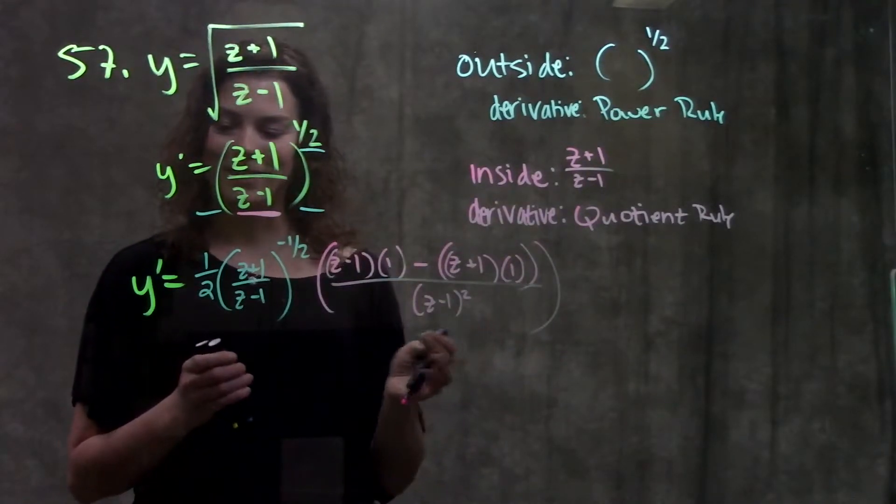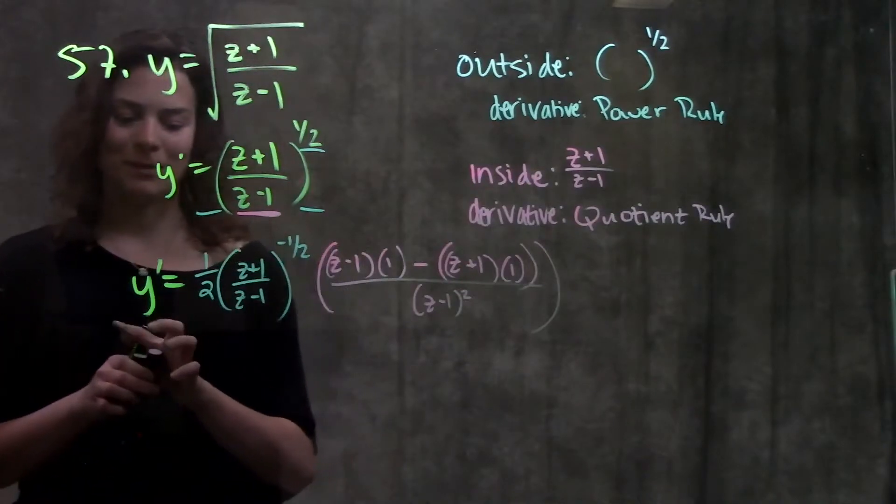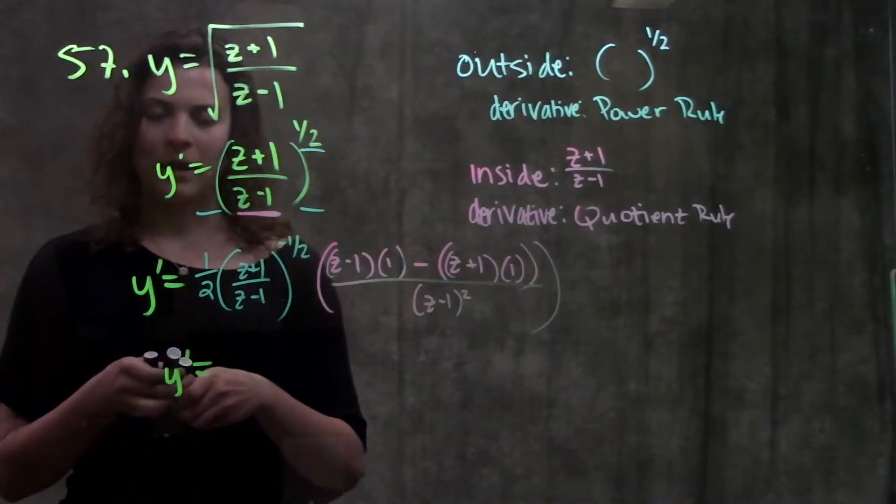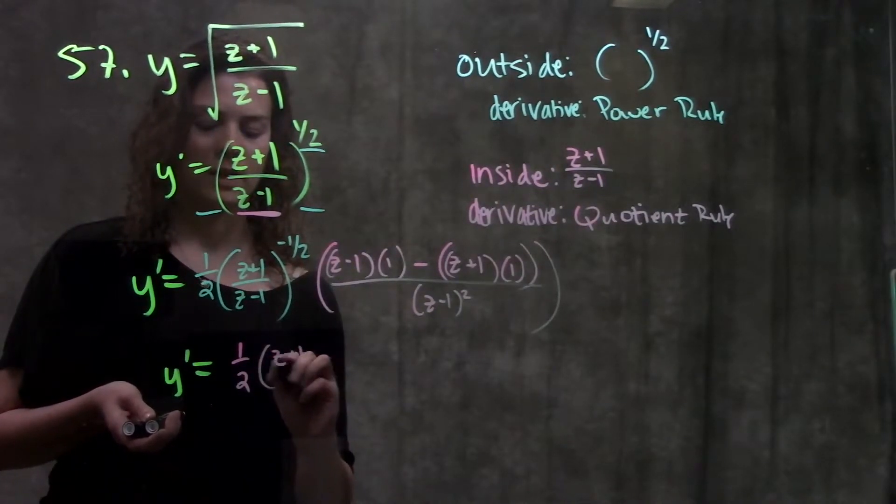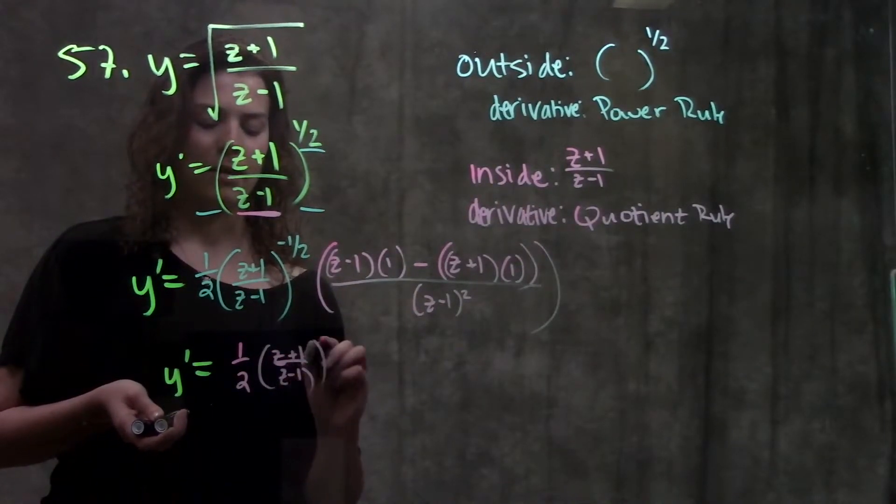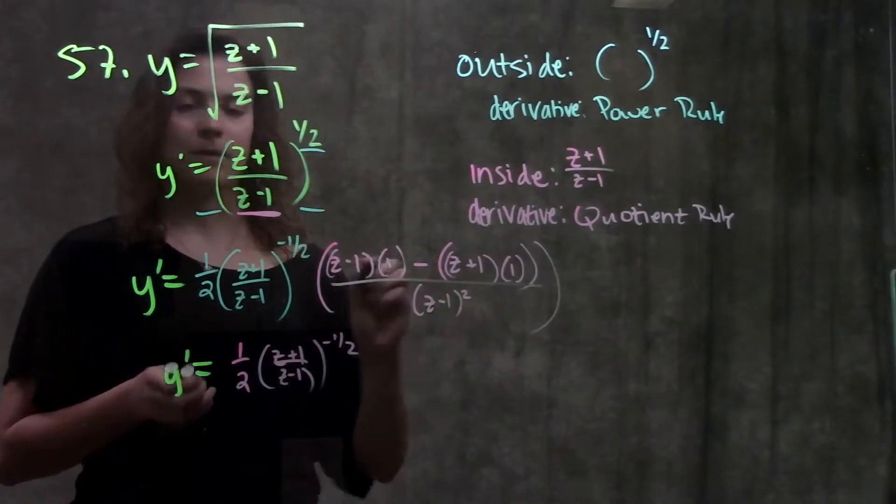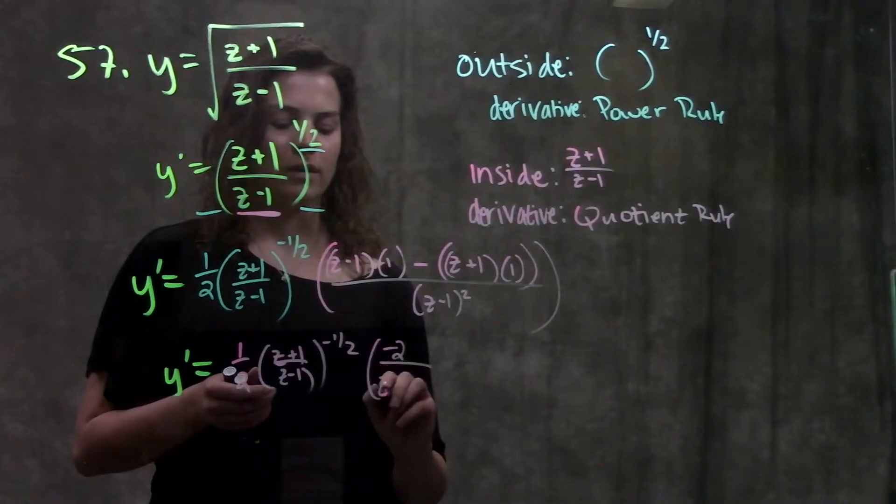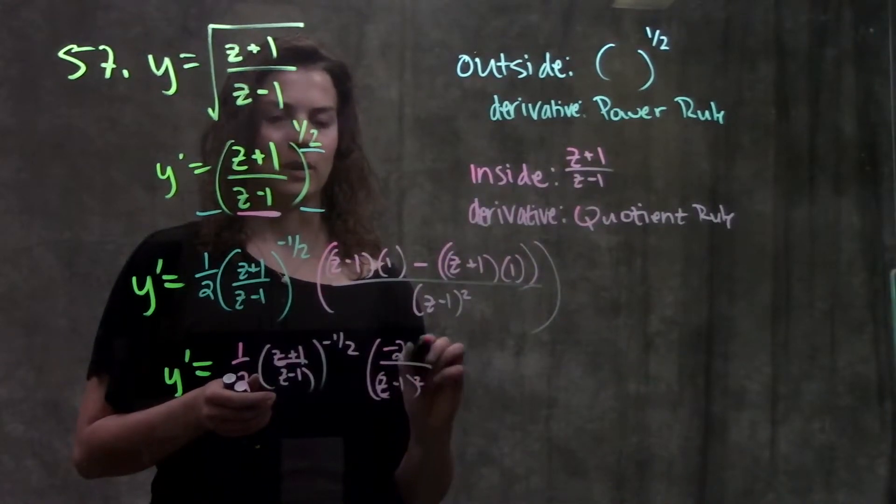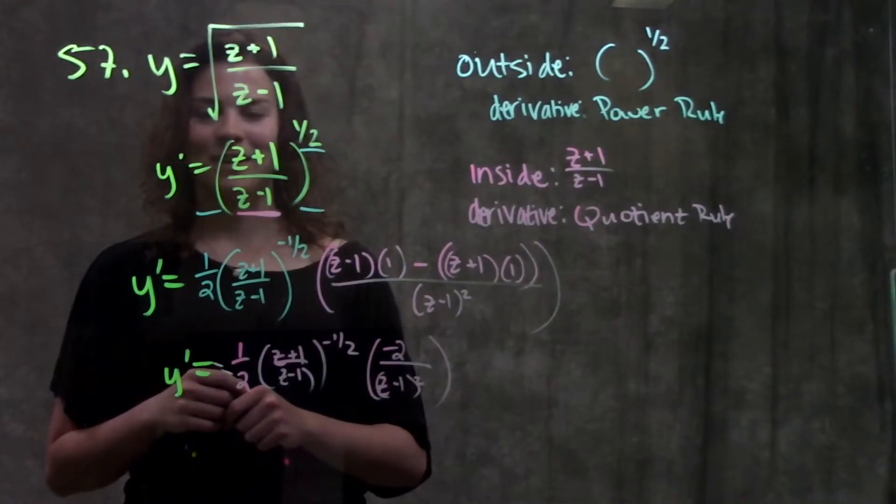This is a whole lot of numbers here, but if you're to go through and simplify all of this, you should get that y prime is equal to one-half, this entire quantity, to the negative one-half power. And when you simplify this part, it becomes minus two over z minus one squared. And that's your final answer.